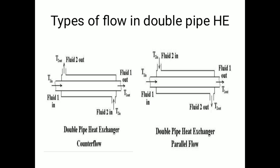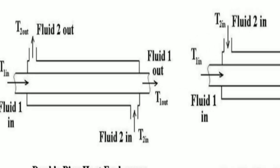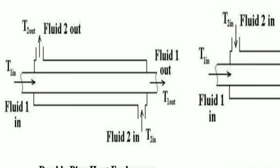While solving numericals based on LMTD, you first need to identify the type of flow. There are two types: counter-current flow and parallel flow. In counter-current flow, the two fluids enter from opposite sides — one fluid enters from one end while the other enters from the other end.